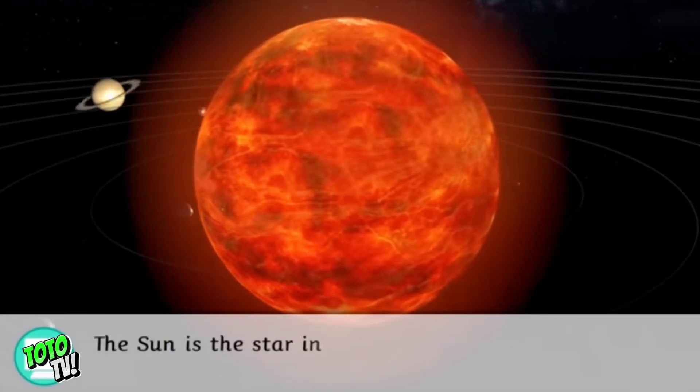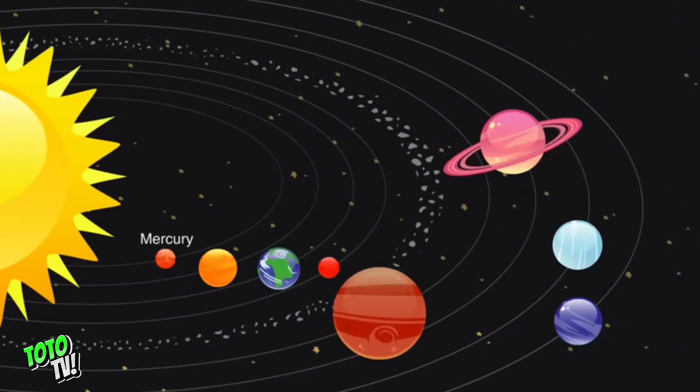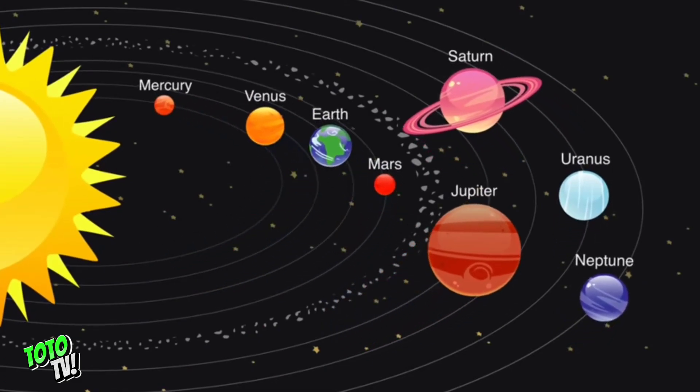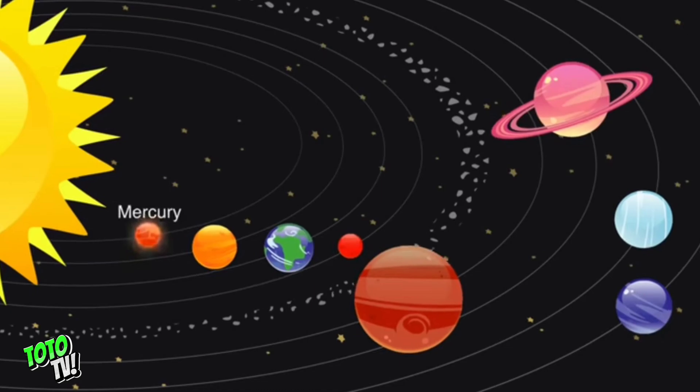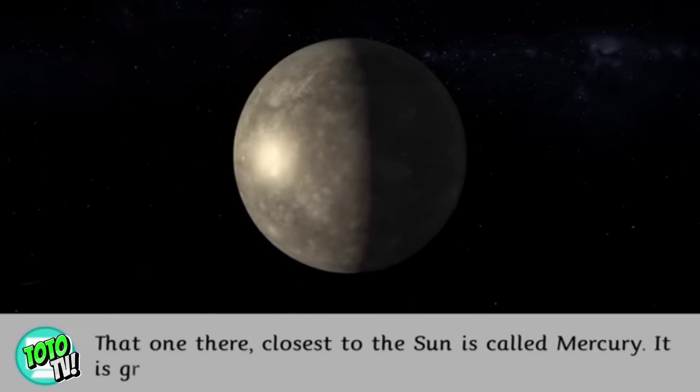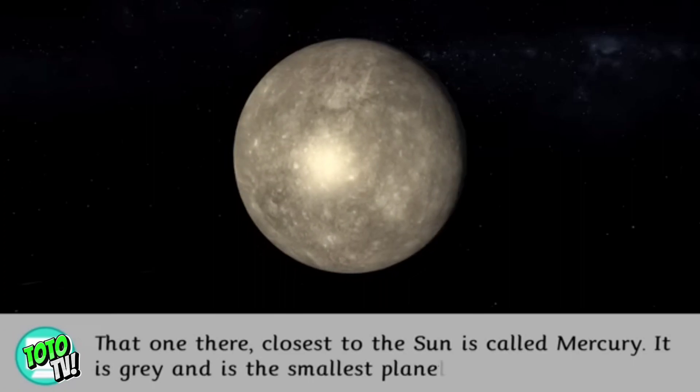The Sun is the star in the solar system. All of the planets orbit around it. That one there, closest to the Sun, is called Mercury. It is gray and is the smallest planet in the solar system.